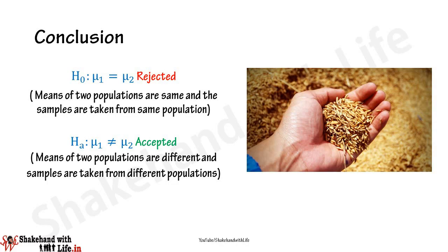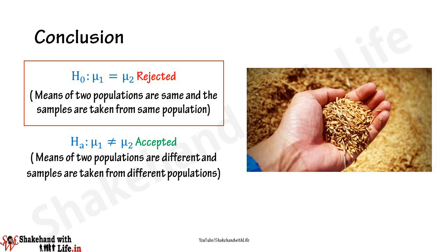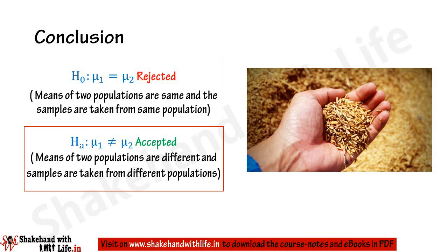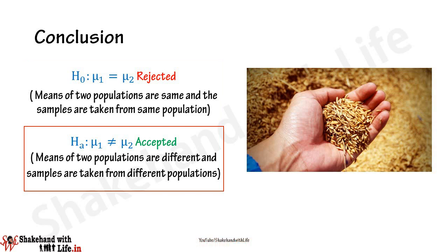Videos of critical value calculation and p-value calculation under two-tailed, left-tailed, and right-tailed test conditions are available on the Shake Hand with Life YouTube channel. From the Z-test, the null hypothesis — that the population means are same and the samples are taken from the same population — is rejected at five percent significance level. We conclude that the means of the populations are different and the samples are taken from different populations.